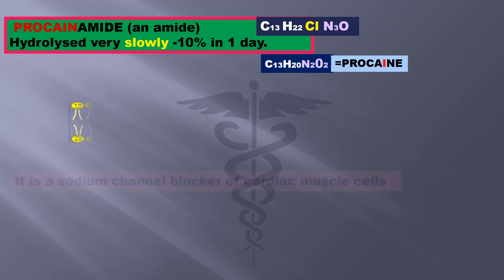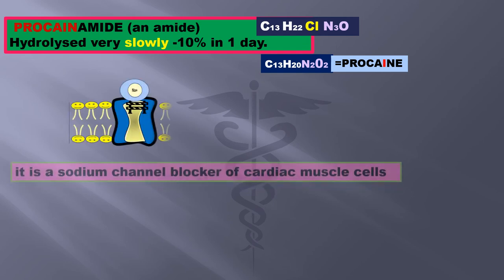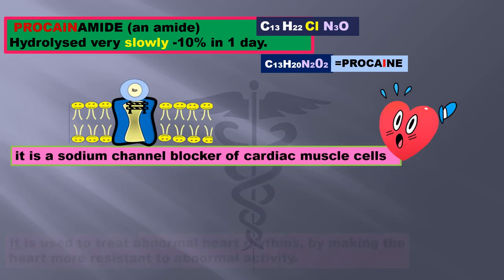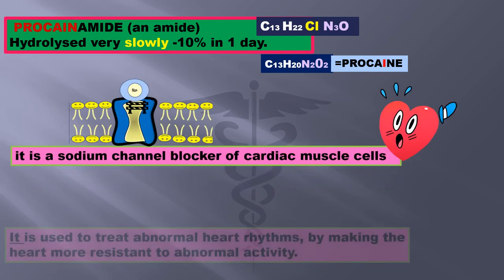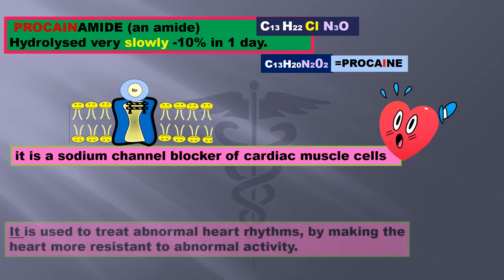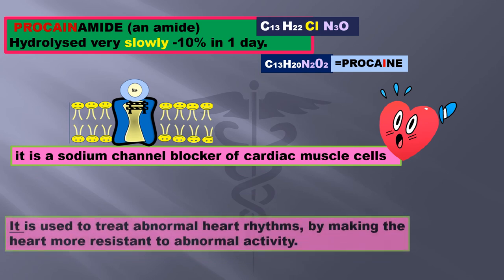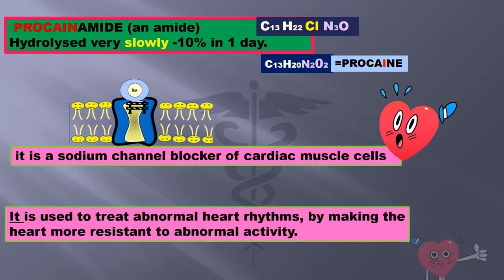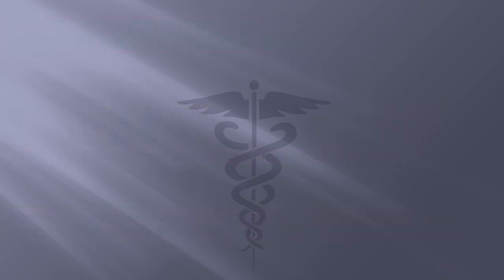Procainamide is hydrolyzed very slowly — about 10% in a day. It is a sodium channel blocker of cardiac muscle cells, used to treat abnormal heart rhythms by making the heart more resistant to abnormal activity.